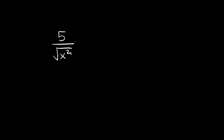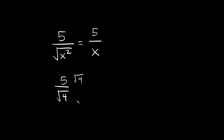Here we have 5 over the square root of x squared. You might be tempted to multiply the top and bottom by the square root of x squared to rationalize it, but this square root is already rational because the square root of x squared is simply equal to x. So the simplified answer is just 5 over x. It works the same with numbers: 5 over the square root of 4 is already rational since 4 is a perfect square and the square root of 4 is 2, giving us 5 over 2.